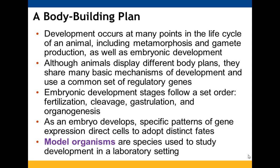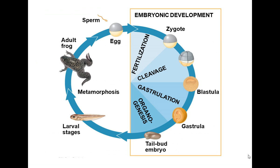As the embryo continues to develop, differentiation and determination start to play a role. Specific patterns of gene expression will direct cells to adopt certain shapes. We can use model organisms in a laboratory setting to study development, since there are a lot of similarities across animals. Those stages of embryonic development are shown, and then in the frog, how it goes through metamorphosis to form an adult frog.